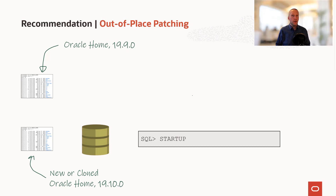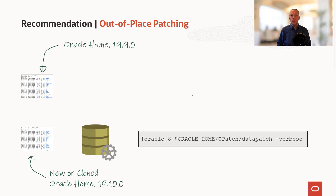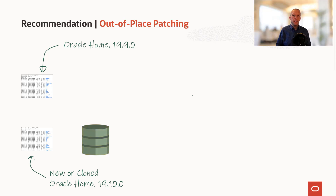You'll notice that the color has changed to green, and that's because we're missing something. We've used opatch, but we still need to use datapatch to get the last changes in. We call datapatch — and please remember, always use the minus verbose option of datapatch, because it gives you much more detailed information that you can use in a situation where you need to debug something. After that, the database turns to green. You can now start to use it — it has been fully patched.